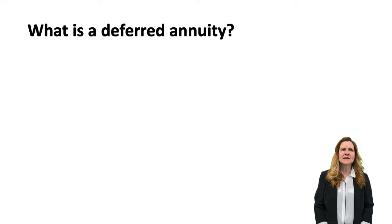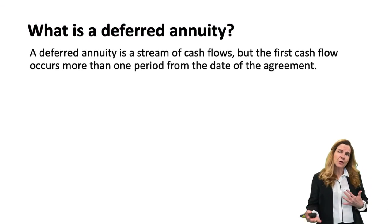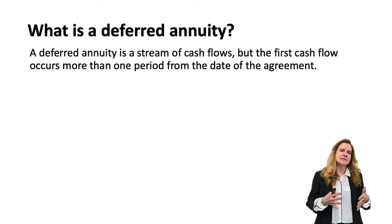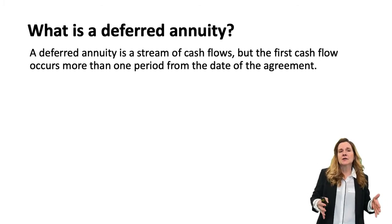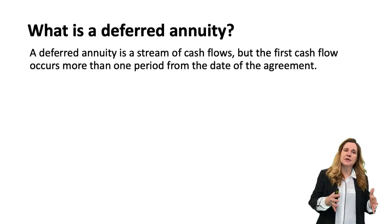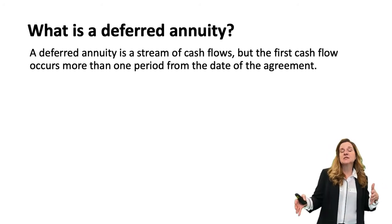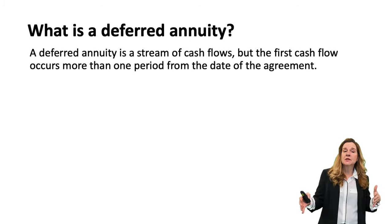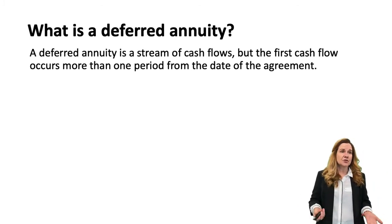So what is a deferred annuity? A deferred annuity is a stream of cash flows — remember, inflows or outflows when we're looking at cash flows — and before they are either going to be paid or coming in, there is a wait time that extends beyond the first period before that actually occurs.